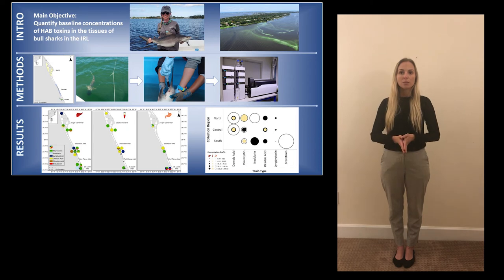At the bottom of your screen, you will see some preliminary analysis of the first 50 samples. We can see in the map to the left that individuals that tested positive for one HAB toxin often tested positive for multiple toxins and that multiple toxins were detected across the lagoon.